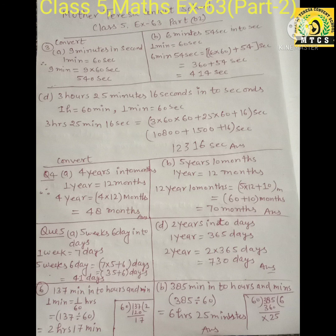Now question number 5, part A: 5 weeks 6 days into days. 1 week is equal to 7 days, then 5 weeks is equal to 5 into 7, and 6 is already in days. So 7 into 5 plus 6 gives 35 plus 6. After adding you will get 41 days.